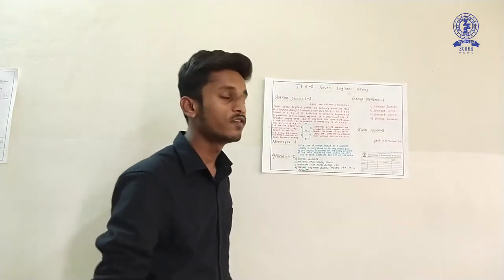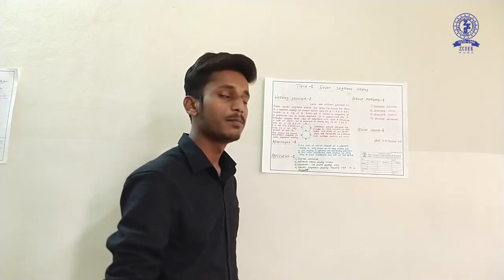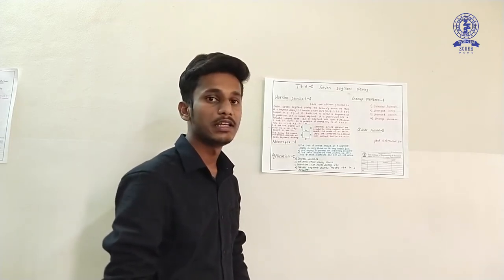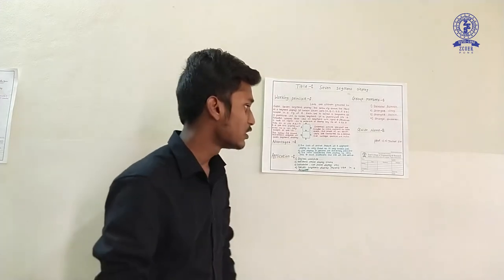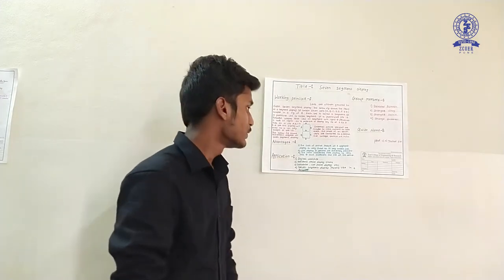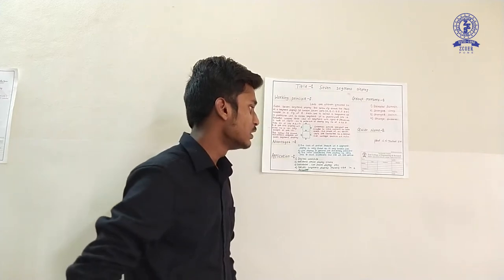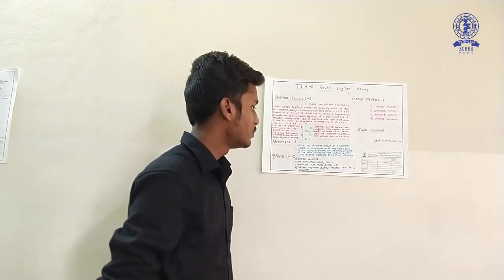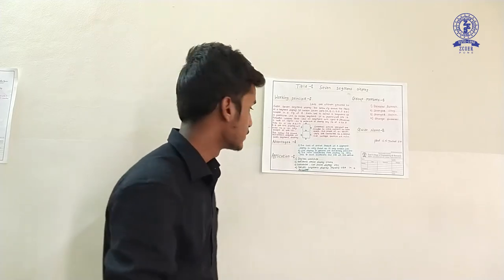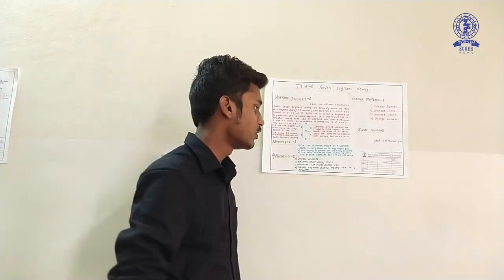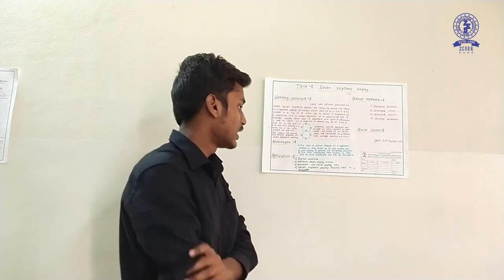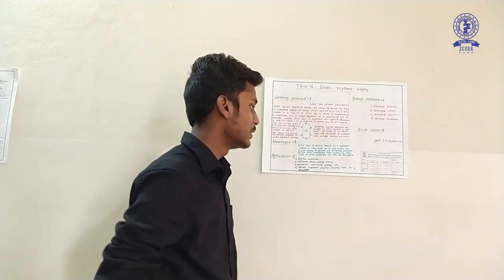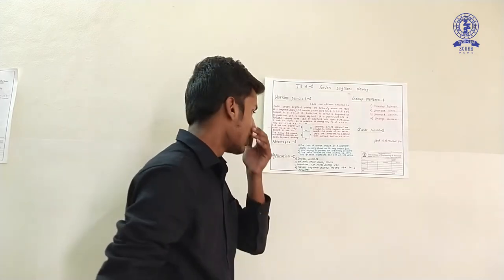Advantages: The cost of the entire module of seven segment display is very cheap. It only contains LEDs, which are general electronic devices. The heat dissipation from the display is very less, which increases the life of the device. Applications include digital watches, electronic devices, display timers, calculators for LED display, etc. Seven segment displays are mostly used in hardware.